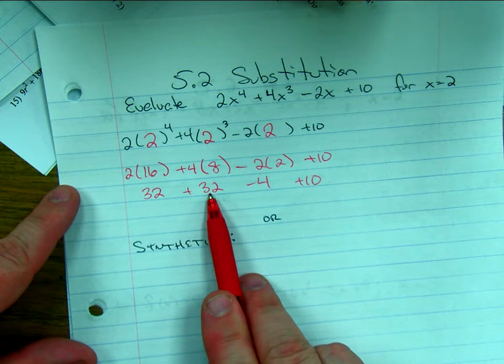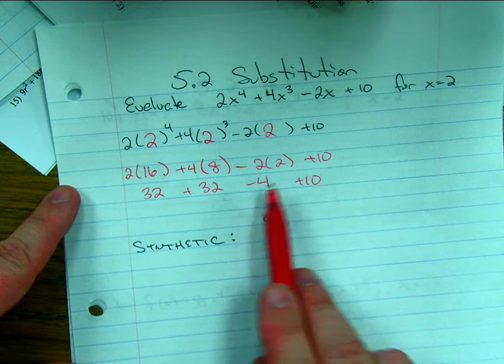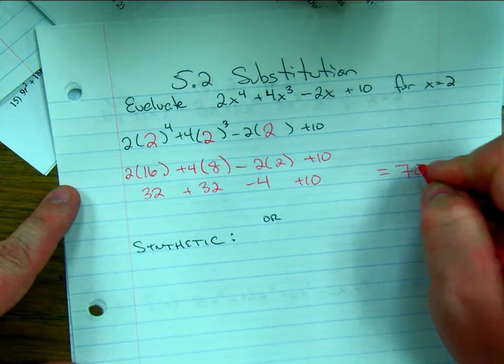And if you look, 32 plus 32, now I'm gonna do my addition and subtraction, that's 64 minus 4 is 60 plus 10 equals 70.